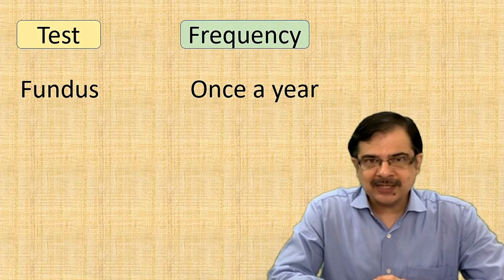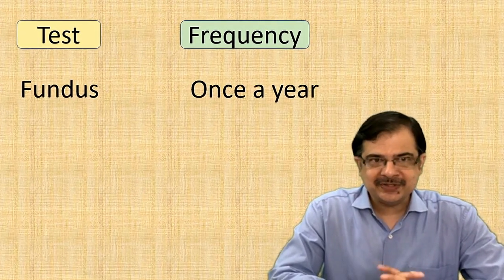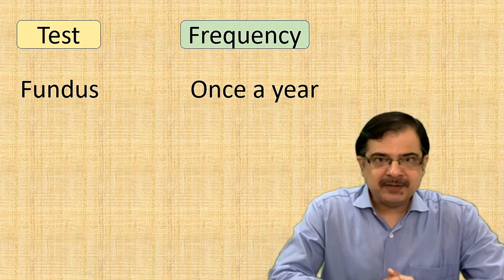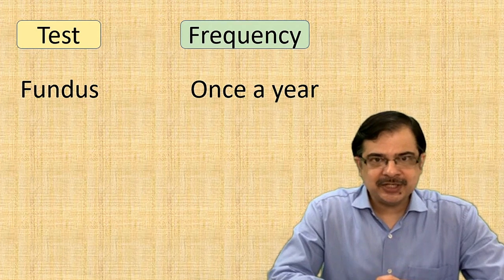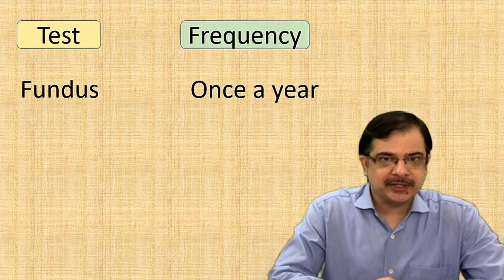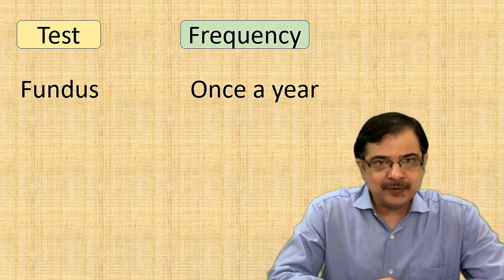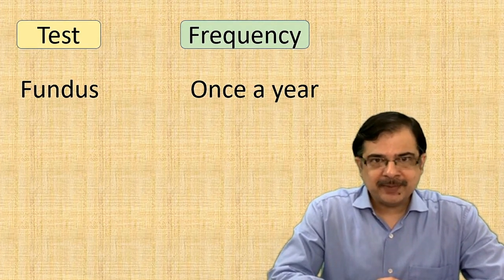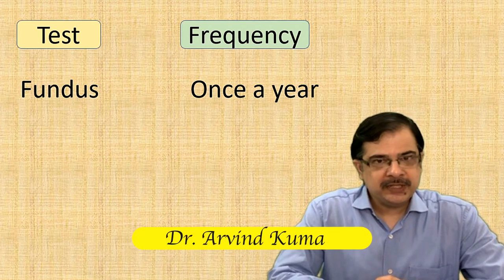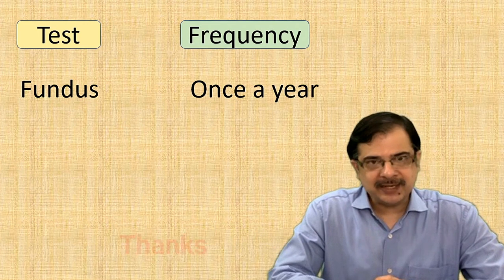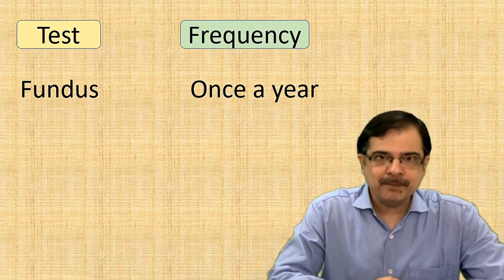Why is it important to get these tests done? Because in diabetes, early damage if detected can be reversed back, and early changes usually do not cause any symptoms to a patient, therefore they are ignored. So every diabetic patient should get not only the blood sugar levels in the form of HbA1c, but also the tests for diabetes complications.